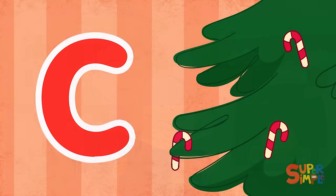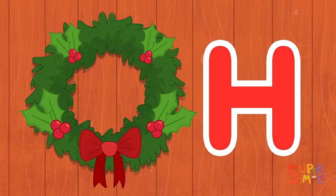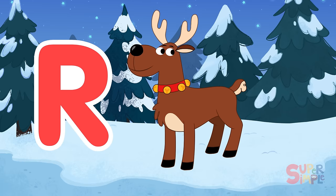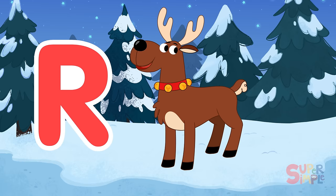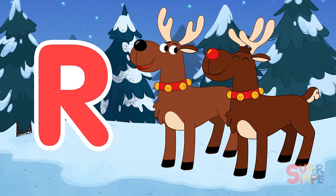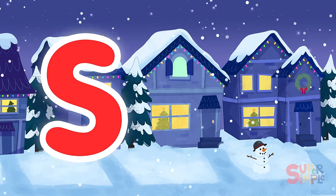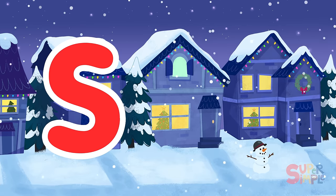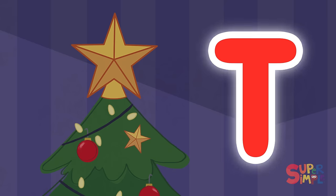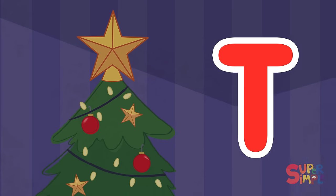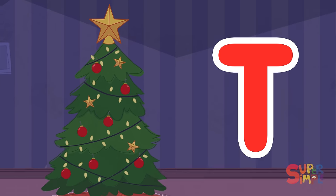C is for candy canes, H is for holly, R is for the reindeer. I is for icicles, S is for snow, T is for the tree.